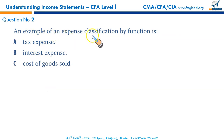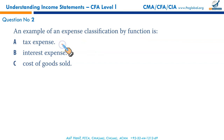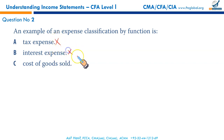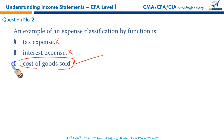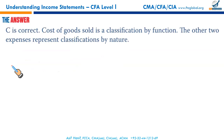An example of an expense classification by function: tax expense is classification by nature. Interest expense is again a classification by nature. Cost of goods sold — yes. Selling expenses, administrative expenses, marketing expenses — this is classification by function, so that is the right option. C is the right answer.